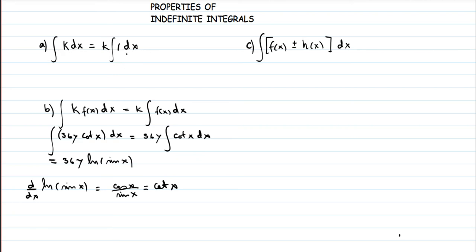The reason is that 1 comes from the derivative of x — the derivative of x is 1. So the integral of 1 dx equals x. Therefore, the integral of a constant k is kx + C, because we are dealing with indefinite integrals.